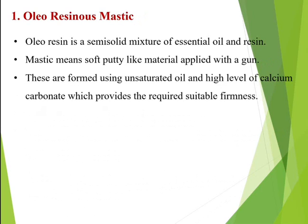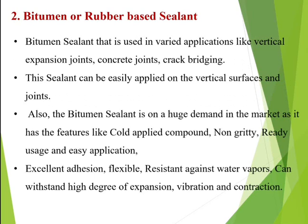The first joint sealant material is oleoresinous mastic. Oleoresin is a semi-solid mixture of essential oil and resin. Mastic means a soft putty-like material which is applied with the help of a gun. These are formed using unsaturated oil and a high level of calcium carbonate, which provides the required firmness to the oleoresinous mastic.